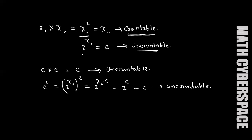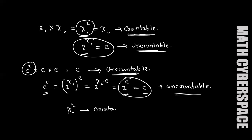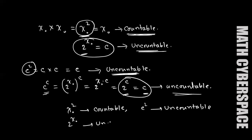To summarize: Aleph naught squared is countable. C squared is uncountable. Aleph naught to the power 2 to the power Aleph naught is uncountable. And 2 to the power C is again uncountable. So Aleph naught squared is countable, while 2 to the power Aleph naught and C squared are both uncountable.